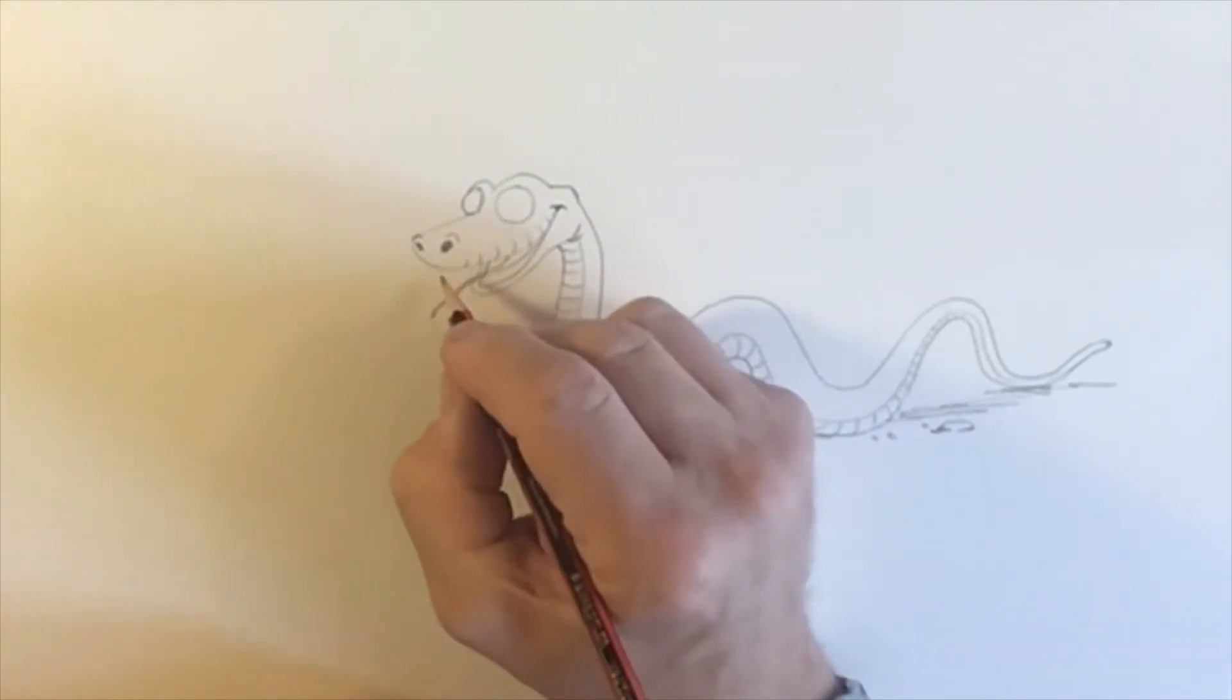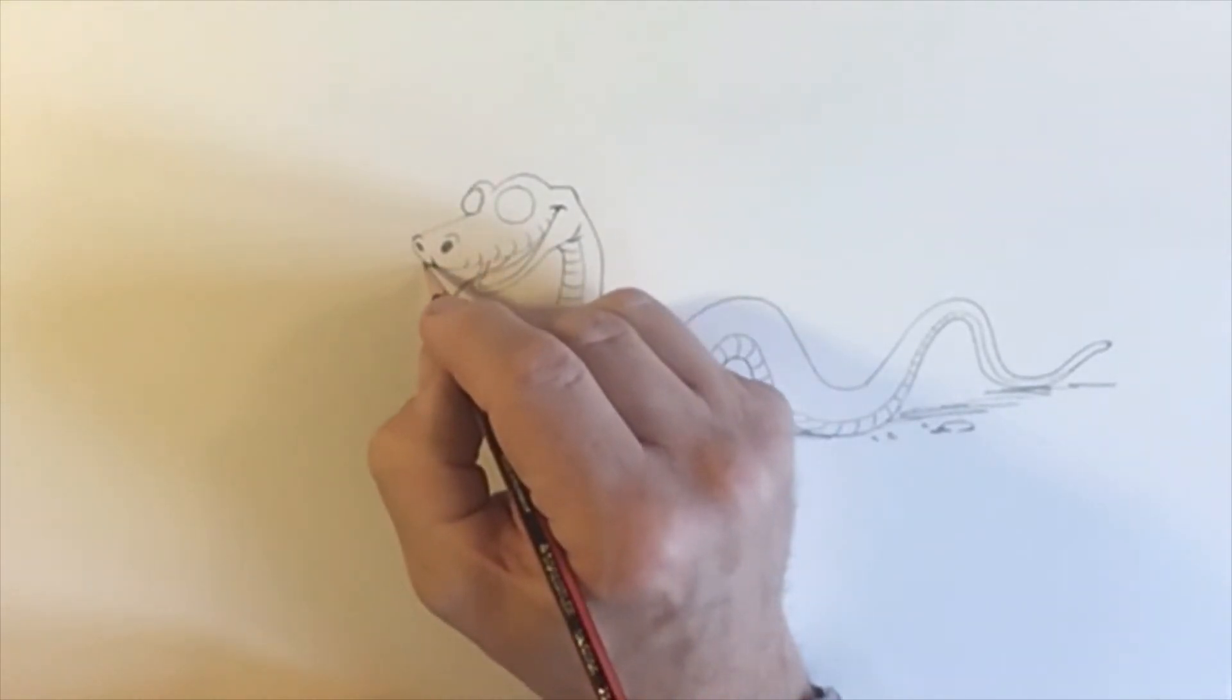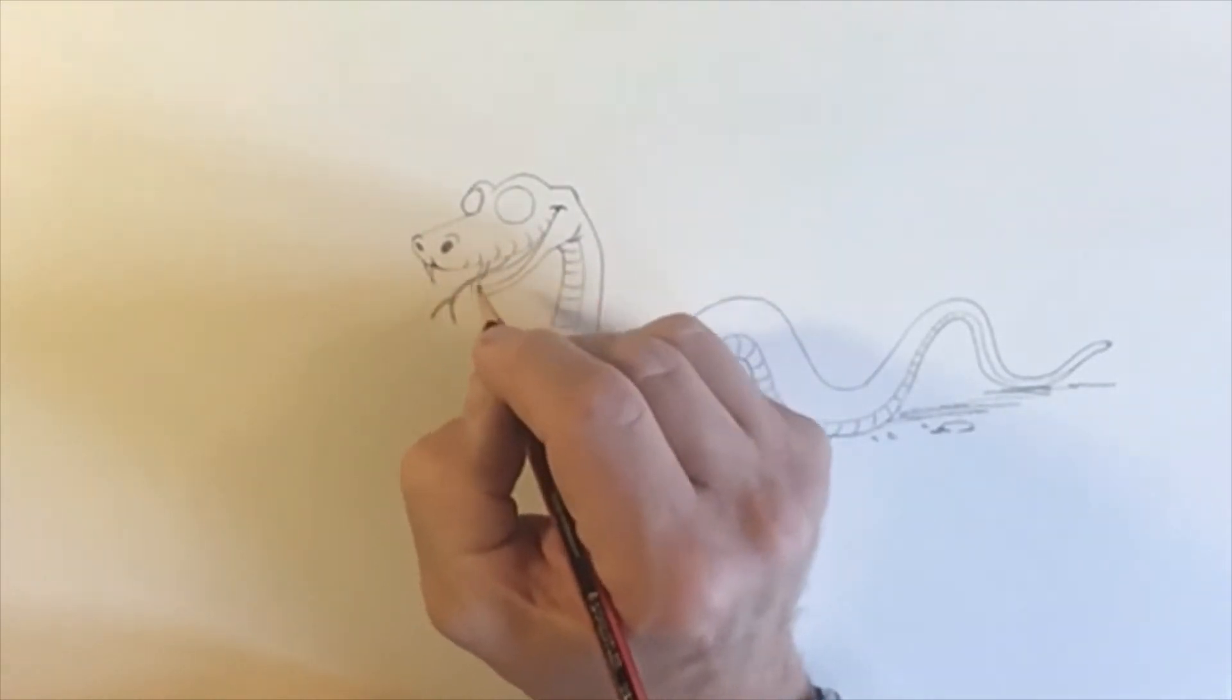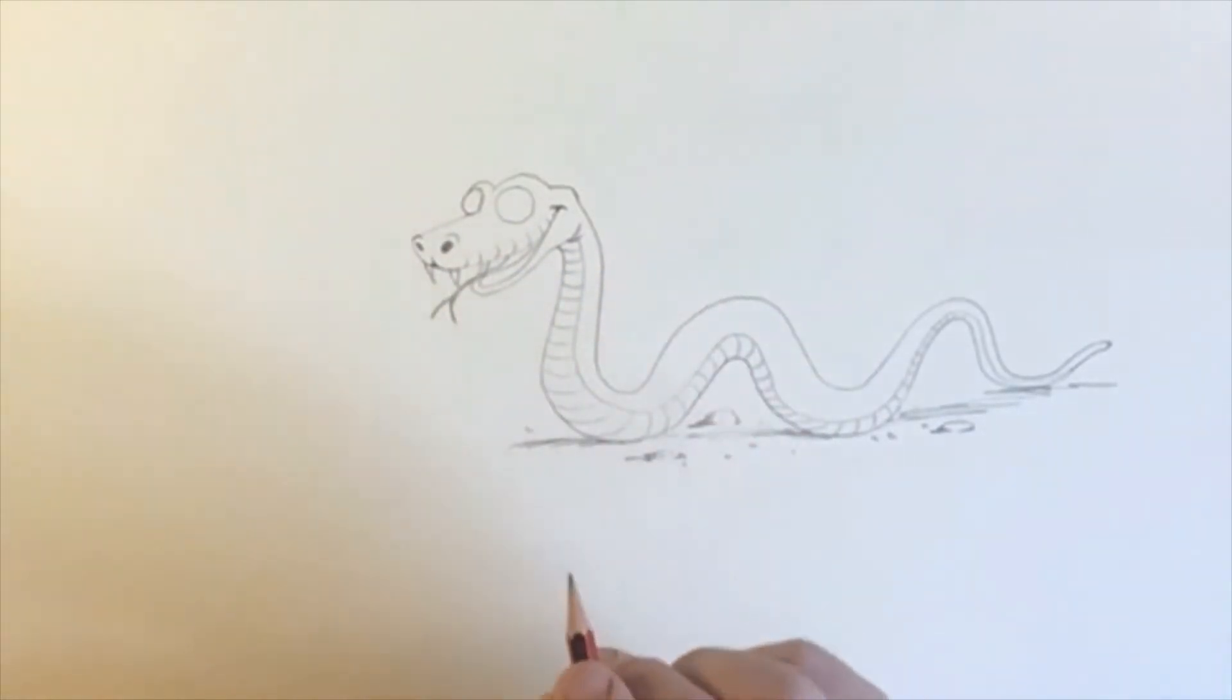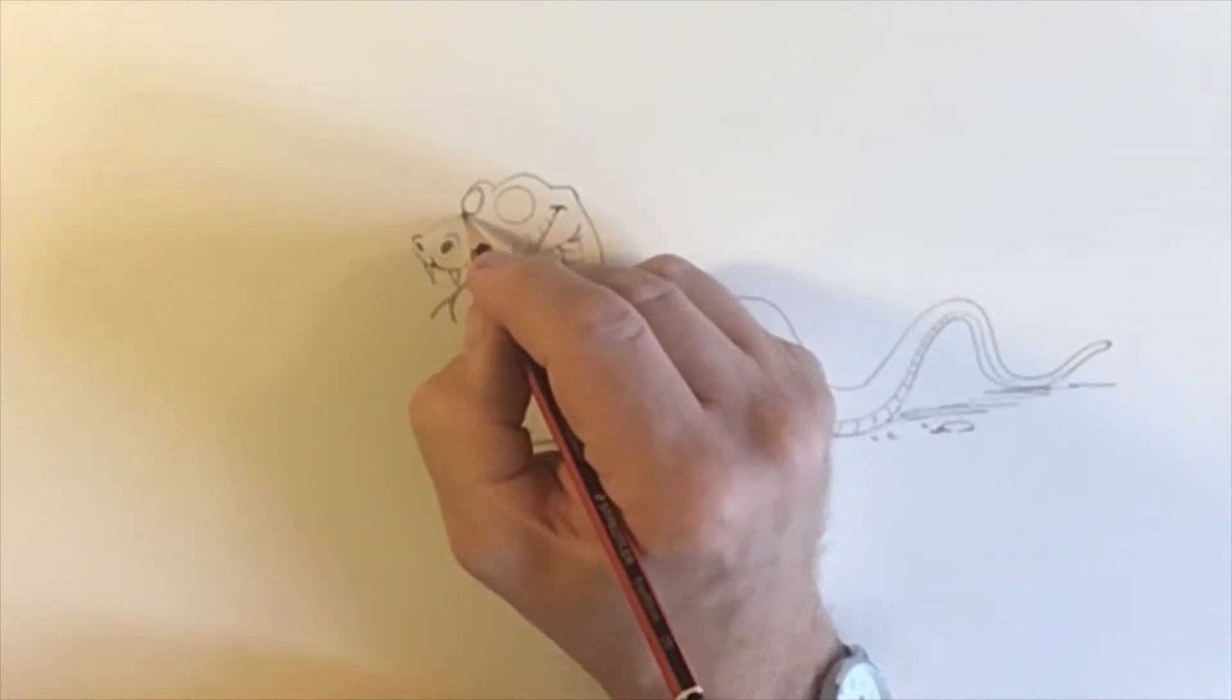The other thing they have is quite scarily sharp and long teeth. I've got a little line in the middle of his nose like that, and then we're going to have one big tooth there, and one big tooth there. The snakes do have to be very careful not to bite their tongues. I'm going to just do a little line just in there.